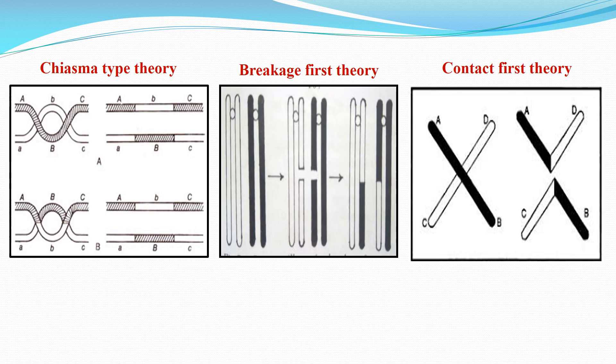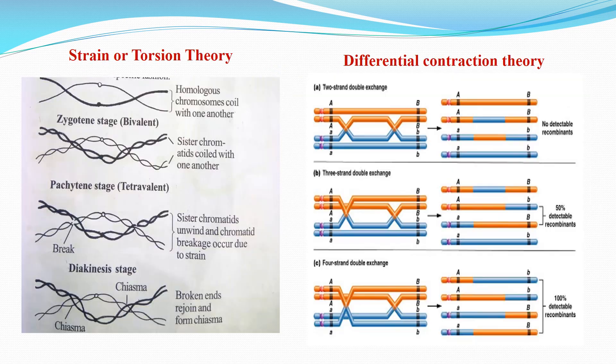The contact-first theory states that non-sister chromatids first touch and cross each other, breakage occurs at the point of contact, and the broken segments rejoin to form new combinations. The strain or torsion theory was proposed by Darlington. According to this theory, homologous chromosomes are relationally coiled around each other in a specific pattern. The differential contraction theory was discovered by Huskins.